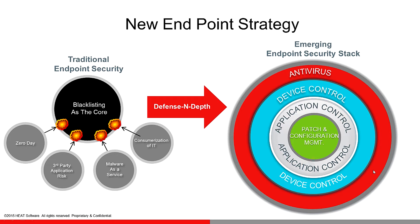A traditional AV solution — if you look at something like AVcomparatives.org — is going to be able to stop about 50% of attacks day zero. So even if it's unknown, they have some degree of behavioural checking. But 50% of millions of attacks is a very large number that they're missing. And if you look at how those pieces of malware get onto a system, it's actually an underlying vulnerability in the operating system or an application. So just by patching alone, you could be preventing around 90% of attacks — a very impressive stat, and one that can be easy to solve in an organization.